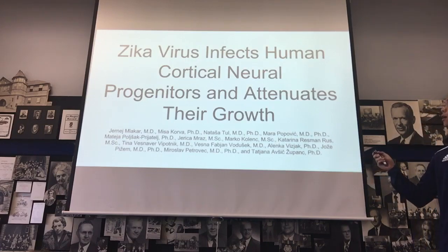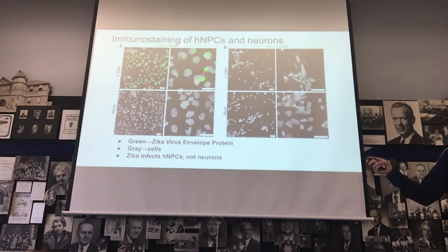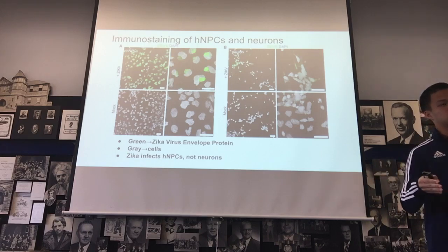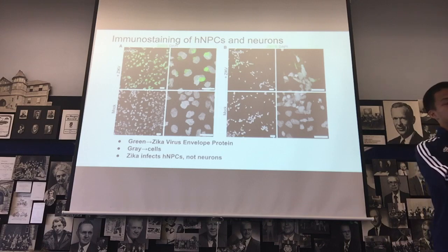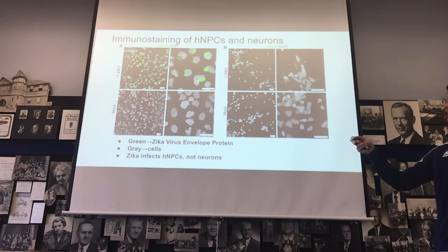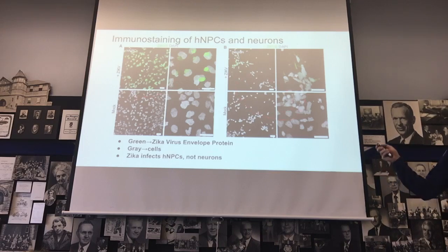The second paper is 'Zika Virus Infects Human Cortical Neural Progenitors and Attenuates Their Growth.' What they did was take human neural progenitor cells — HNPCs. When stem cells differentiate into neurons, there's an intermediate step: stem cells become HNPCs, and HNPCs then become neurons. In vitro, they took HNPCs and immature neurons — recently differentiated neurons — and introduced Zika to see what kind of infection was occurring and at what rates.